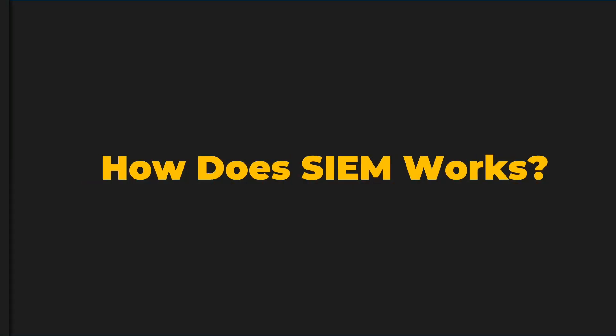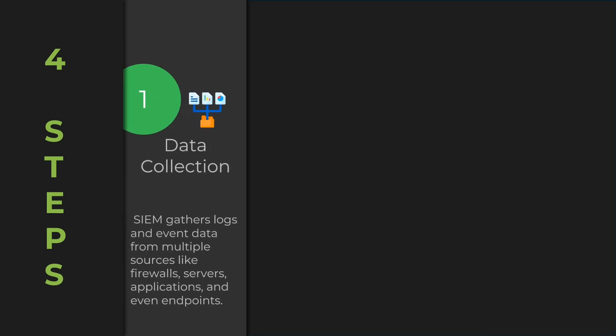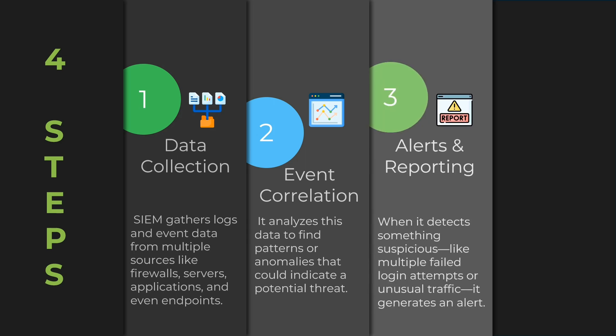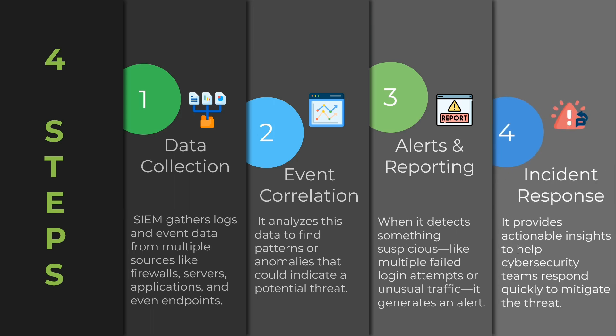Here's how it works. SIEM operates through four steps, ensuring that your organization stays ahead of cyber threats. Step 1: Data collection — SIEM gathers logs and event data from multiple sources like firewalls, servers, applications, and even endpoints. Step 2: Event correlation — it analyzes this data to find patterns or anomalies that could indicate a potential threat. Step 3: Alerts and reporting — when it detects something suspicious, like multiple failed login attempts or unusual traffic, it generates an alert. Step 4: Incident response — it provides actionable insights to help cybersecurity teams respond quickly to mitigate the threat.